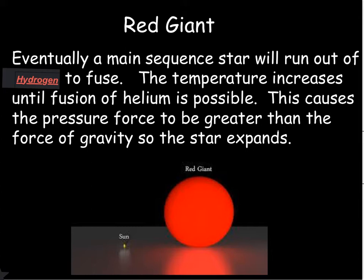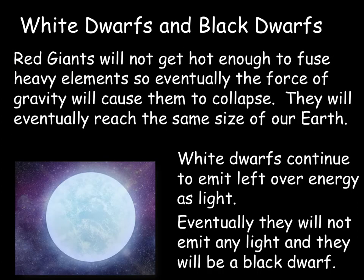The shrinking increases the temperature and pressure until the fusion of helium becomes possible, which then causes an increase in the pressure force and the star expands. The pressure force is unstable — the force of gravity remains constant, but you get a shrinking and expanding effect which eventually leads to the red giant. The red giant will fuse heavier elements including helium and sometimes beyond, producing even heavier elements. However, red giants cannot get hot enough to fuse really heavy elements, so eventually gravity causes them to collapse as it overcomes the pressure force of nuclear fusion.